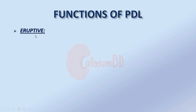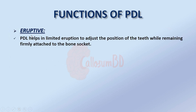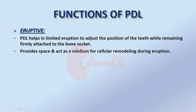Eruptive function of the periodontal ligament: the periodontal ligament helps in limited eruption to adjust the position of teeth while remaining firmly attached to the bone socket. It provides space and acts as a medium for cellular remodeling during eruption.